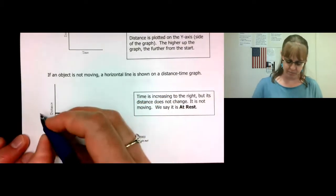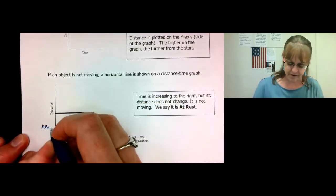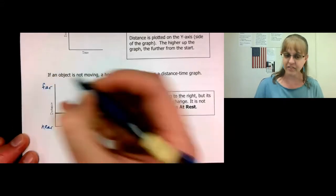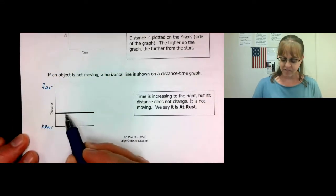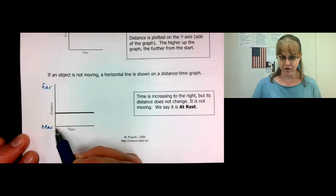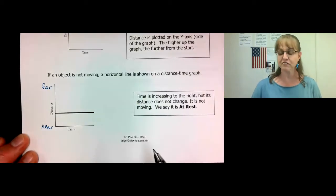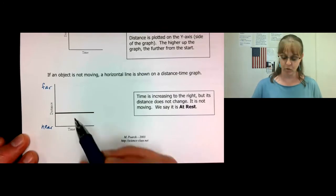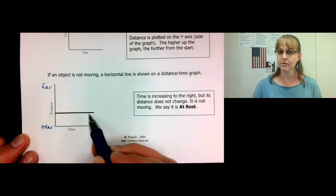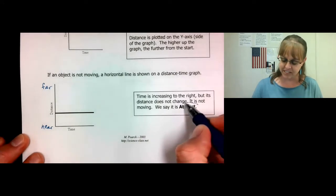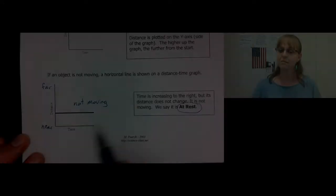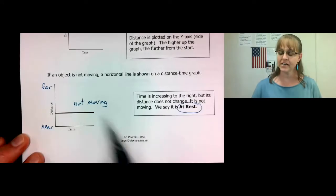I like to put the words 'near' and 'far' on the graph, because notice how this line is not getting nearer to the detector and it is not getting farther from the detector. Therefore, this object is not moving. This object is at rest. Please write 'not moving' beside this graph.